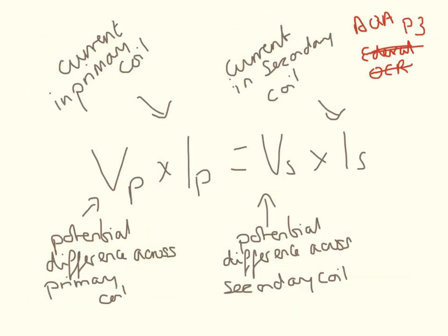This is the second equation. This is for AQA only, and the potential difference across the primary coil times the current in the primary coil is equal to potential difference across the secondary coil times the current in the secondary coil. So potential difference is measured in volts, and current is measured in amps.